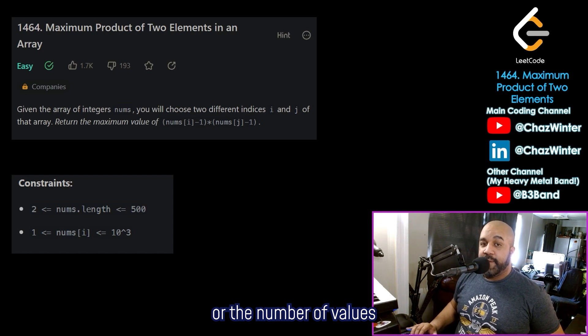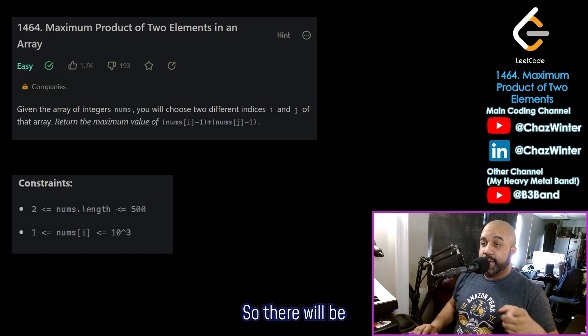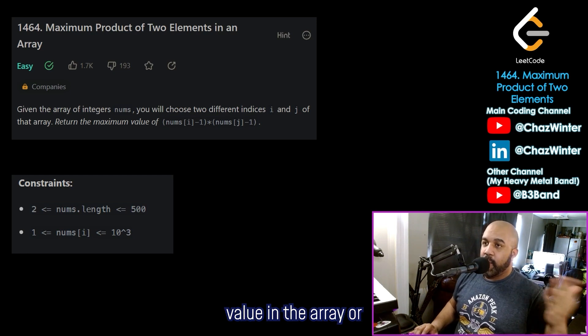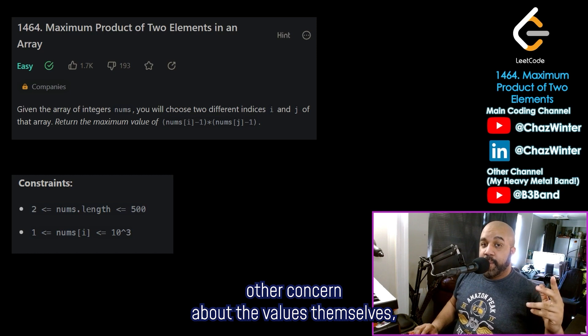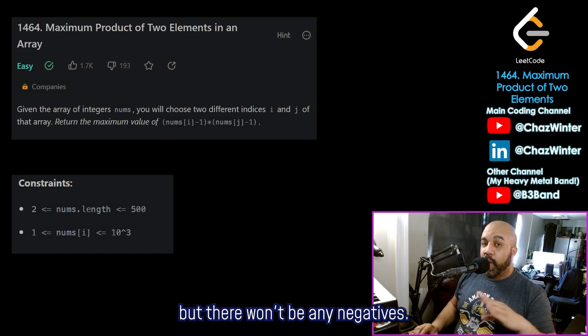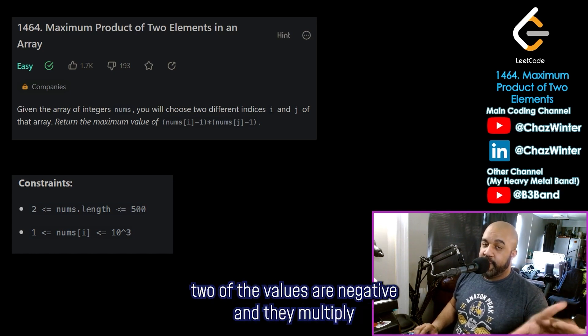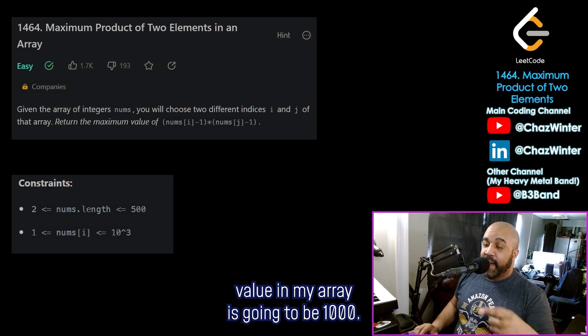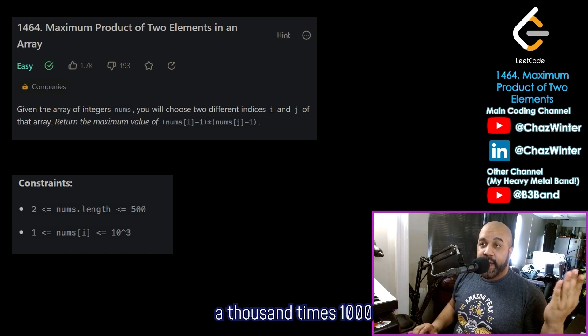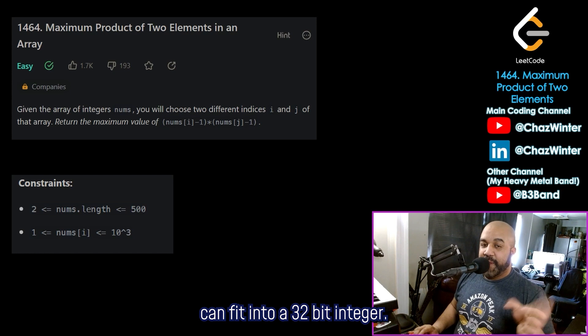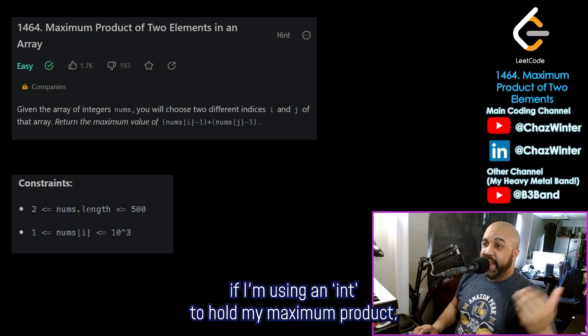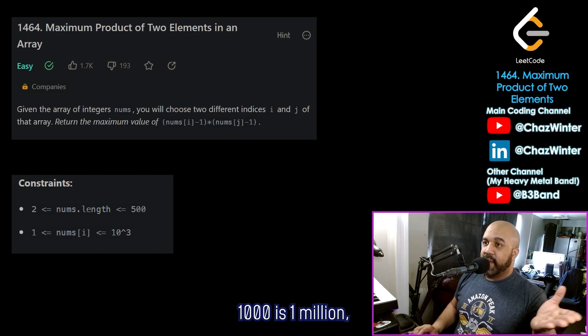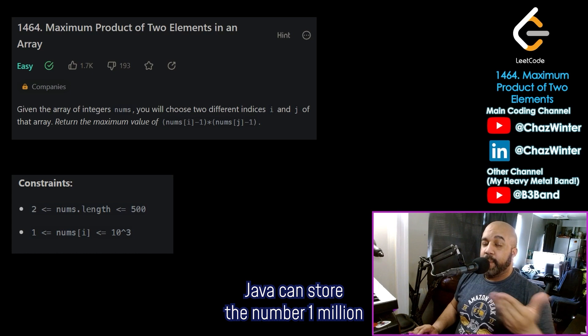Fortunately, on LeetCode, they answer these questions for us by providing constraints. And our constraints actually address all of these concerns that I just had. For example, nums.length, or the number of values that will be in my array, has a minimum of two. So there will be at least two values in the array. It's guaranteed, so I don't have to worry about what to do if there's only one value in the array or if the array is empty. And then as for that other concern about the values themselves, I do see that there could be a one in my array, but there won't be any negatives. So I don't have to worry about a situation where two of the values are negative and they multiply into a positive. And then on the other side, the largest possible value in my array is going to be 1,000. And that's also great for us because if that number appears twice in the array, 1,000 times 1,000 is only 1,000,000. And 1,000,000 can fit into a 32-bit integer. So that means, for example, in Java, if I'm using an int to hold my maximum product, I don't have to worry about the integer overflowing.